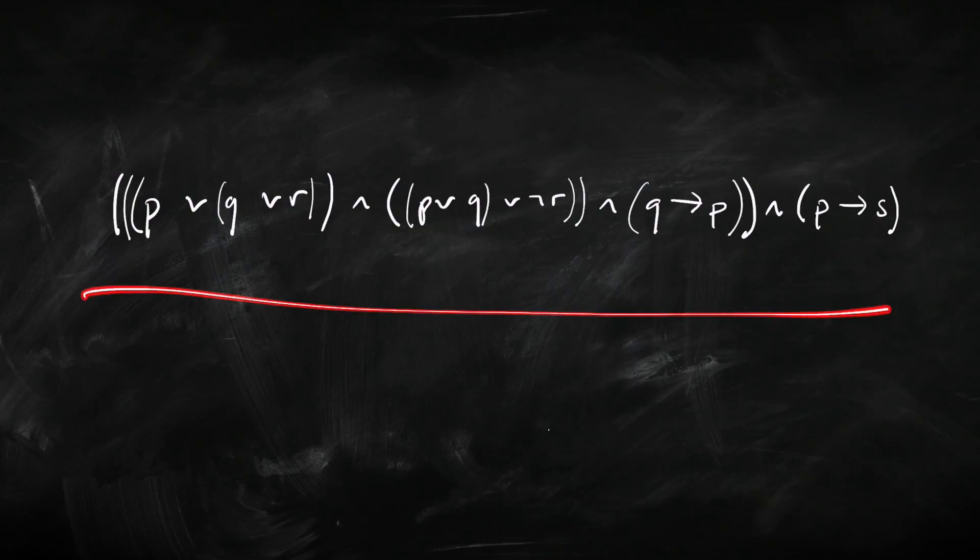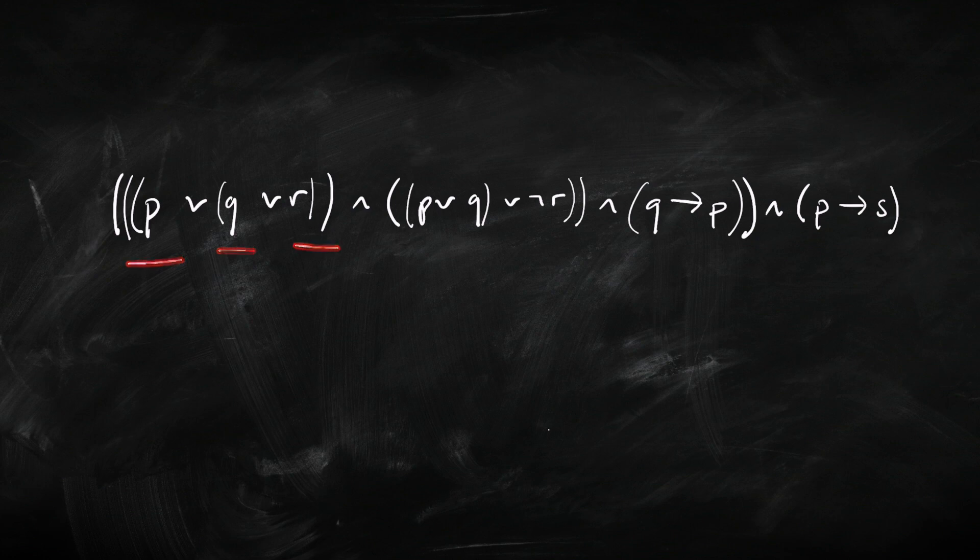That example was pretty straightforward, but now look at this sentence here — this one is going to be an absolute pain. What on earth does it mean? It's got four primitive sentence letters in it, so it's going to have a 16-line truth table, which is going to be an absolute pain to draw out and prone to mistakes. Let's see if we can fiddle around with this sentence to make it make a bit more sense without having to go via the truth table.